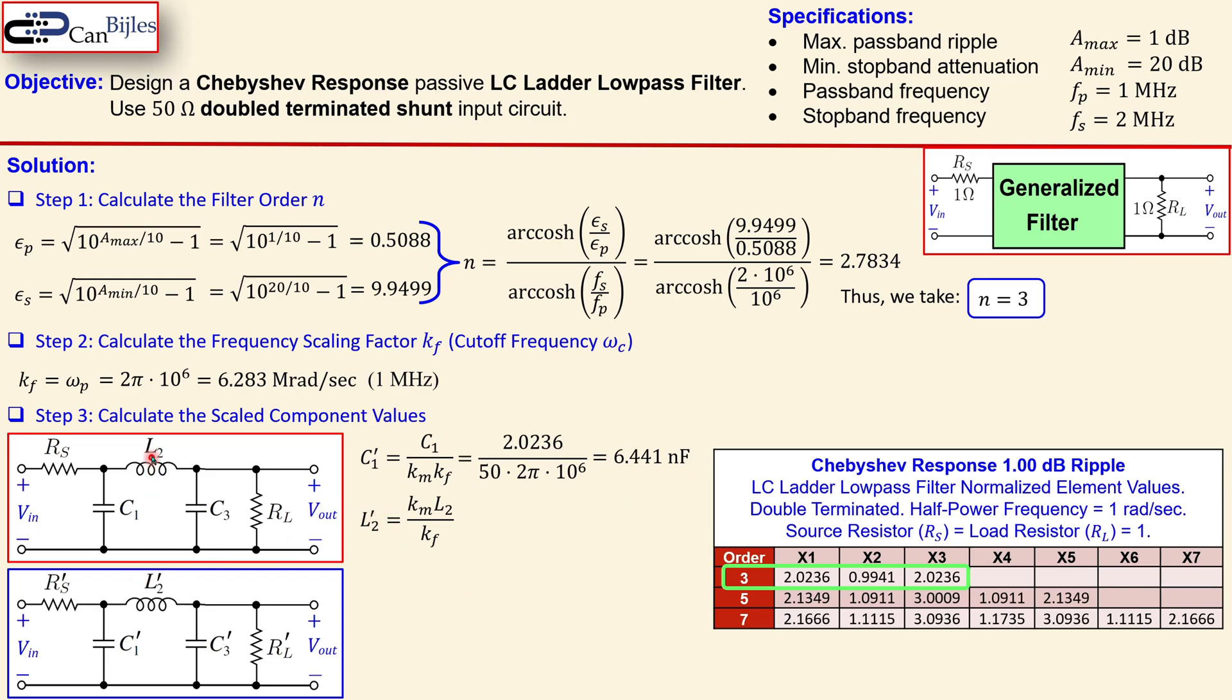L2 prime which is then the scaled value here is again similar formula. If you just substitute the 50 here, 2 pi 10 to power 6 and 0.9941 from the table you get now 7.911 microhenries. And C3 prime is exact same as the C1 prime so the exact same value. So you get now 6.441 nF.